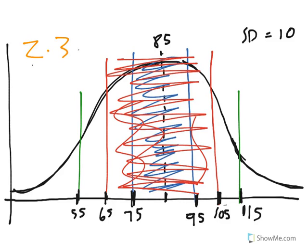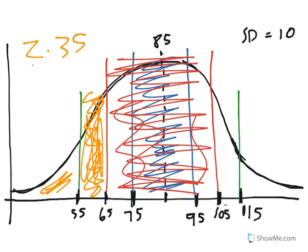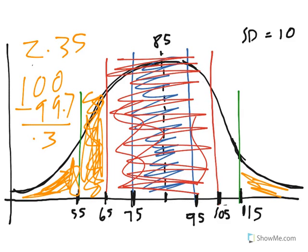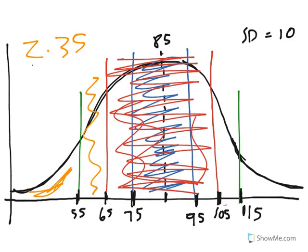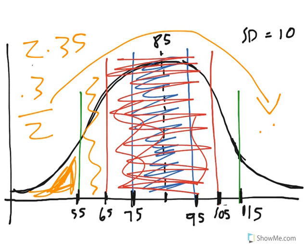Now we have 2.35, but that only accounts for this part of the percentage. We still need to figure out this area. We take 100, we minus 99.7% from this, which gives us 0.3, which we know is the total amount of these two areas of the normal curve. But since we only care about this area of it, we divide 0.3 by 2, which gives us 0.15.